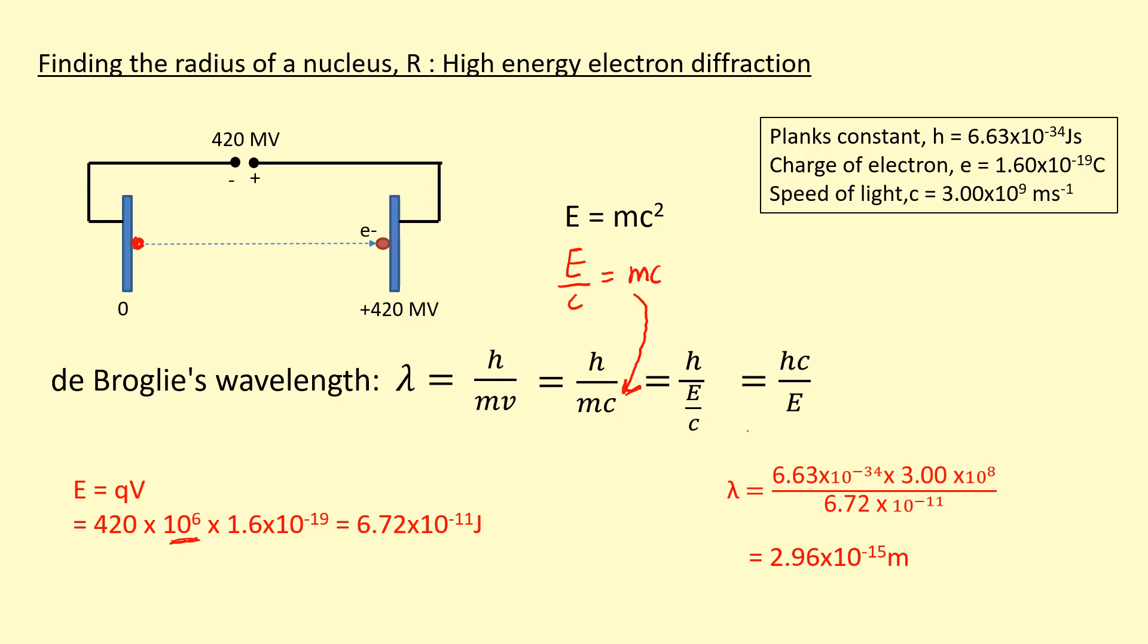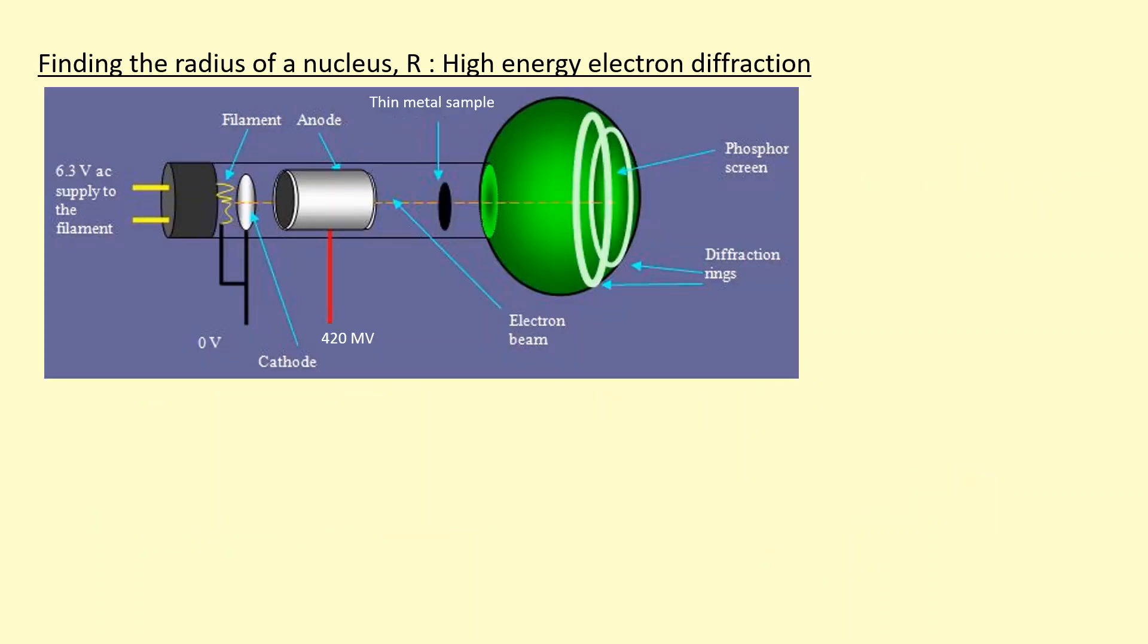Now I can study how it's going to diffract. Here is the apparatus I'm using for my high-energy electron diffraction. These filaments over here will release electrons when they're heated, and they're going to get accelerated between the cathode and anode to the wavelength that we calculated in the last part.